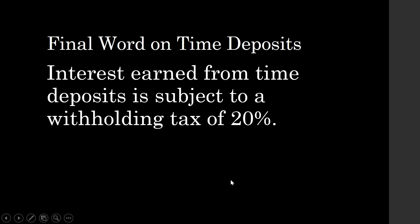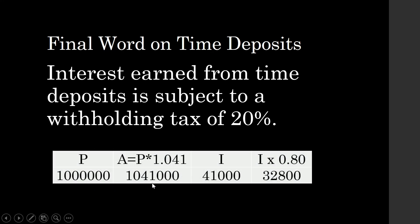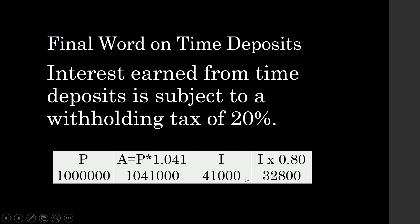One final word on time deposits: interest earned from time deposits is subject to a withholding tax of 20%. For example, if you have 1,000,000 pesos deposited in Security Bank at 4.1% interest, after one year you will earn 41,000 pesos in interest, making your total 1,041,000 pesos. However, that 41,000 pesos is subject to 20% withholding tax, so you will only receive 80% of it. Your net interest is therefore 32,800 pesos, not the full 41,000.